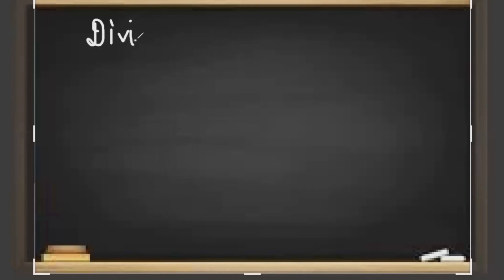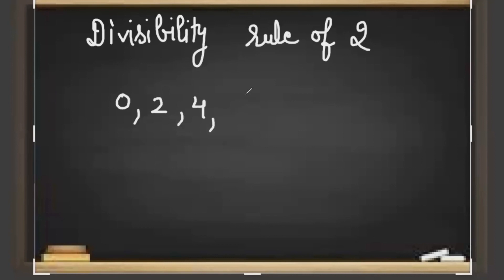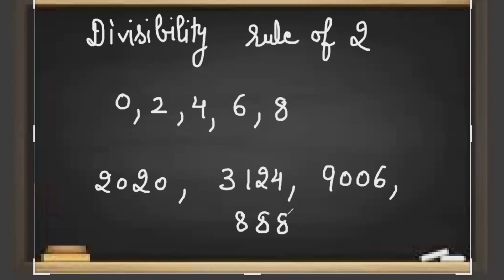Divisibility rule of 2: If in the unit place of a number there is 0, 2, 4, 6, or 8, then we can say that number is divisible by 2. For example, 2020, 3,124, 9,006, 8,888.